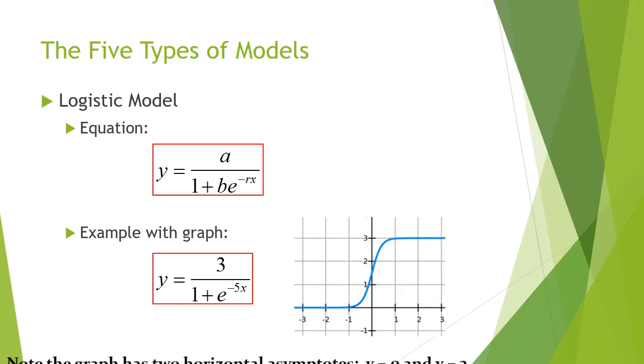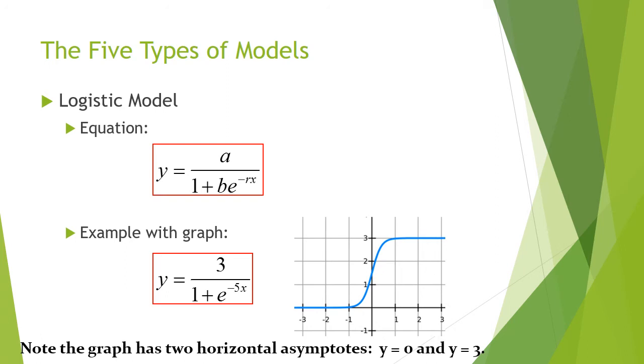This actually has two horizontal asymptotes. It has one at y equals 0. This one has one at y equals 3. That asymptote, the top one, is going to be whatever A is, whatever that top number is.